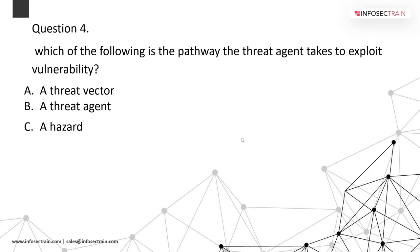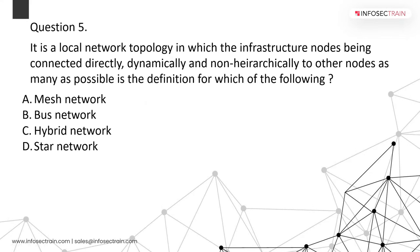A local network topology in which infrastructure nodes are connected directly, dynamically, and non-directly to as many other nodes as possible is the definition of a mesh network. The correct answer is mesh network, also known as mesh net in network topology. This is used inside bridges, hubs, switches, and other devices connecting directly in a dynamic and non-hierarchical manner.